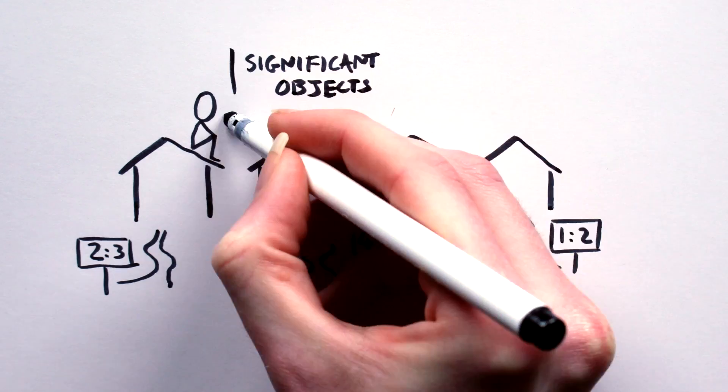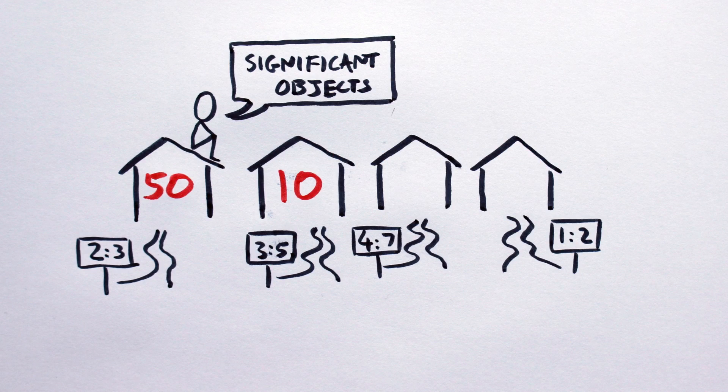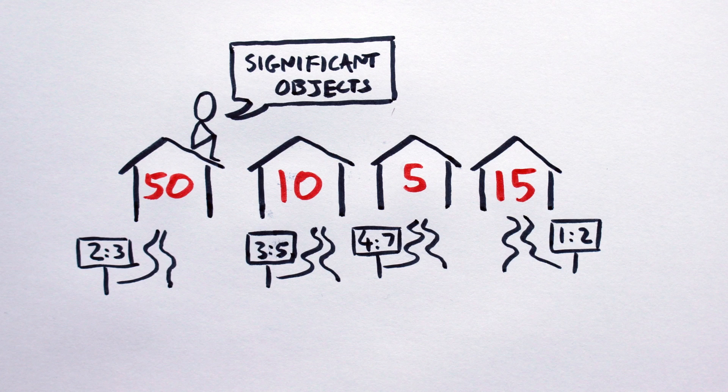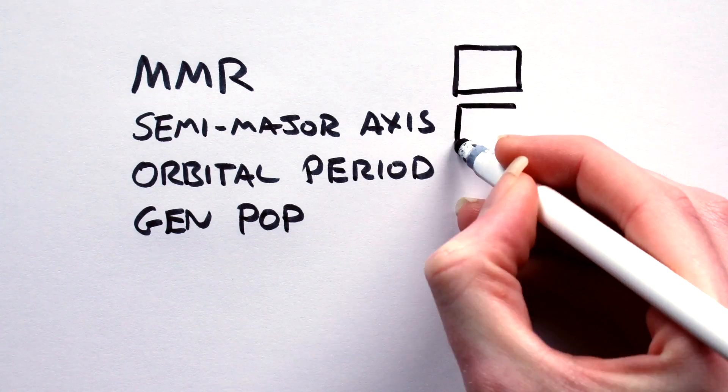Keeping relative stability in mind and choosing numbers at will, I'll go with 50 objects at two to three, ten at three to five, five at four to seven, and fifteen at one to two. With our mean motion resonances, semi-major axes, orbital periods, and general populations well-defined, we need to consider the final two unique parameters: eccentricity and inclination.